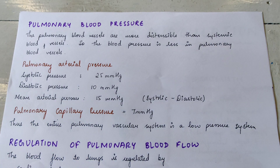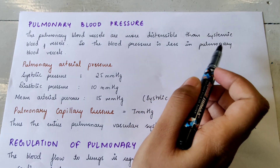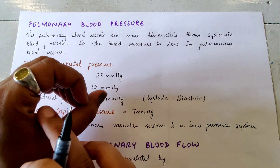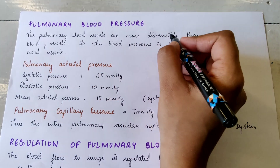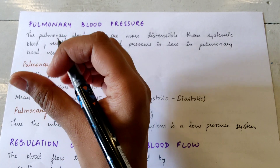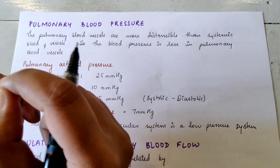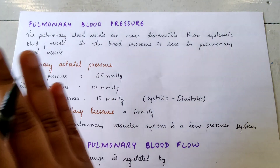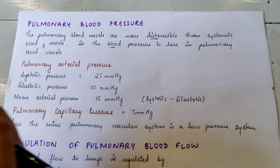Pulmonary blood pressure: the pulmonary blood vessels are more distensible than systemic blood vessels, so the blood pressure is less in the pulmonary blood vessels. When vessels are distensible they are not rigid. Imagine holding a pipe — if it has a very narrow hole and is not distensible, the pressure comes out in force. Because pulmonary blood vessels are distensible, the blood pressure is less.